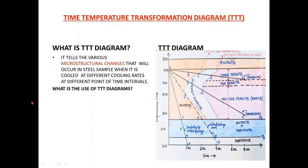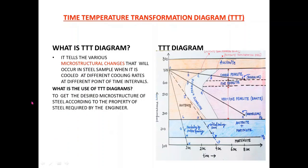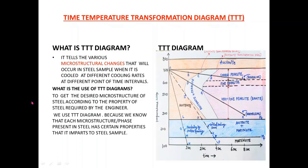It tells us basically when a heated steel sample is cooled slowly in a controlled manner, what are the various microstructure changes or phase changes that will occur in the steel sample at various intervals of time as the temperature decreases gradually. That is, it tells us the various phase transformations that the steel will undergo with time while we cool the steel sample.